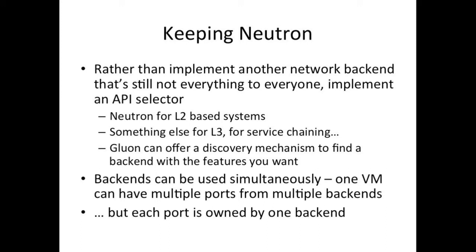We're not throwing Neutron away. We're keeping Neutron as one of the alternatives we might use in the back end. Neutron is very good at doing what it does — very good at layer two networking — and we don't want to throw that away. But if we want to do layer three, service chaining, or whatever somebody comes up with tomorrow in a room full of network engineers, we can implement an API that suits that better. And you can use multiple back ends simultaneously. We're not saying you can only use Neutron for this virtual machine or this entire cloud. I can make a virtual machine with five ports and give each port to a different back end. That works just fine.